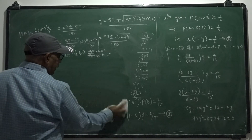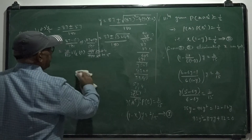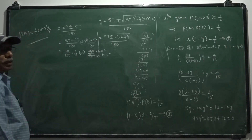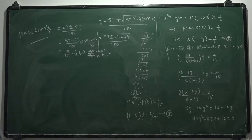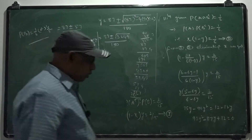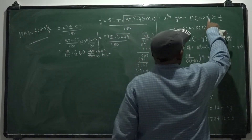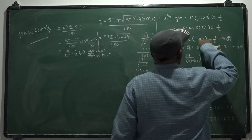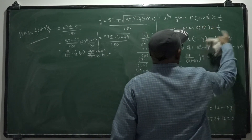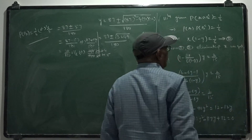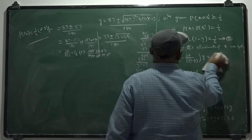The basic concept of this problem is: once A and B are independent, A complement and B are independent, and A and B complement are also independent. That is the key concept here.